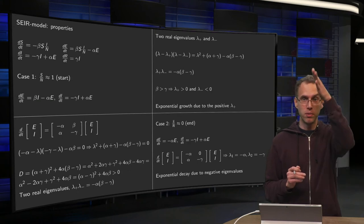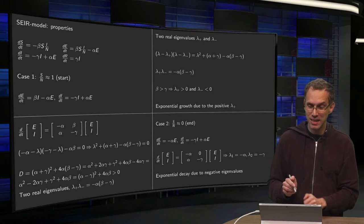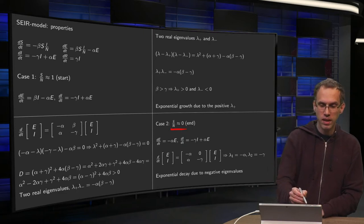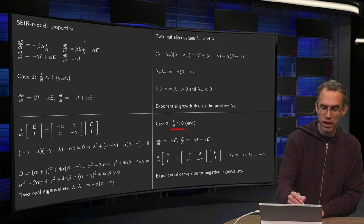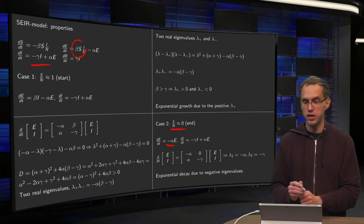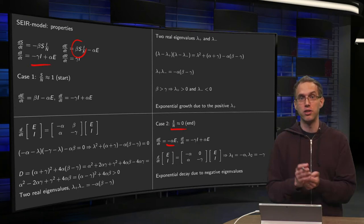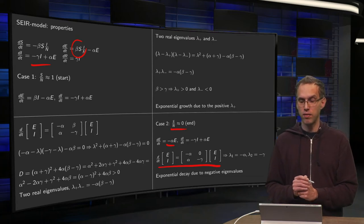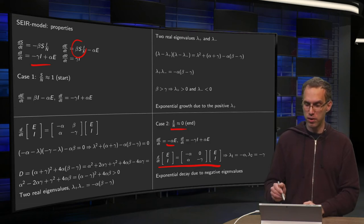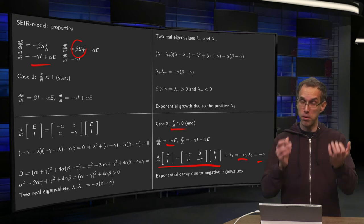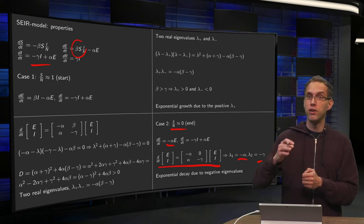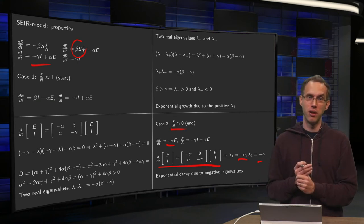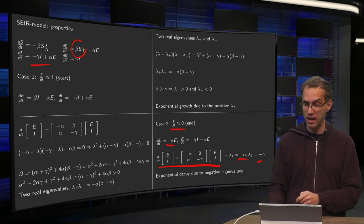Now, so that's what's happening at start, exponential growth. Now, let's take a look what's happening at the end. Then S of N is approximately equal to zero. So what do we get then? Then the EDT over here, this term drops out. So you get the minus alpha E. The IDT is still the same. So you can again write your system as differential equations, as x prime equals A times x. Now is this matrix A over here. You can read off immediately your eigenvalues. They are minus alpha and minus gamma. So they are both negative. So by the end of the epidemic, you will have an exponential decay. So eventually, whatever you do, you will always go into a phase of exponential decay due to your negative eigenvalues.